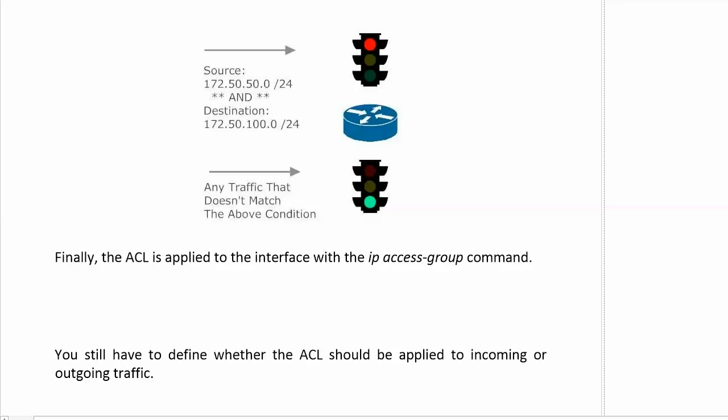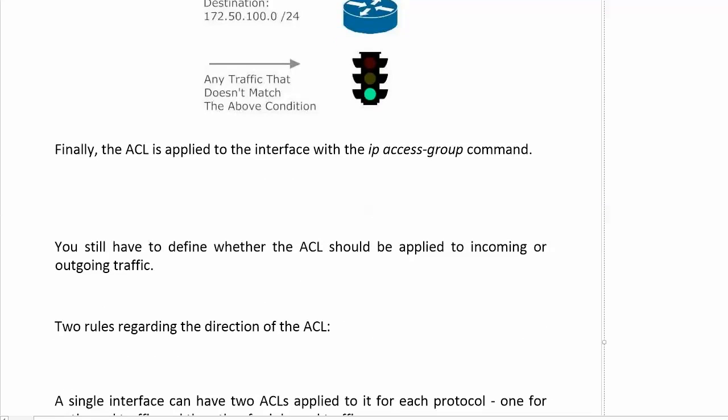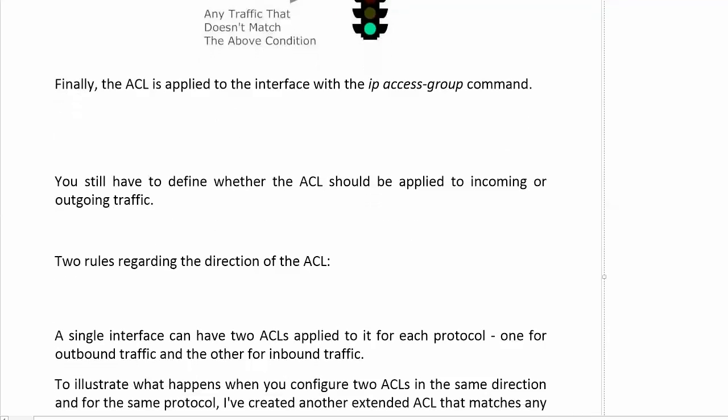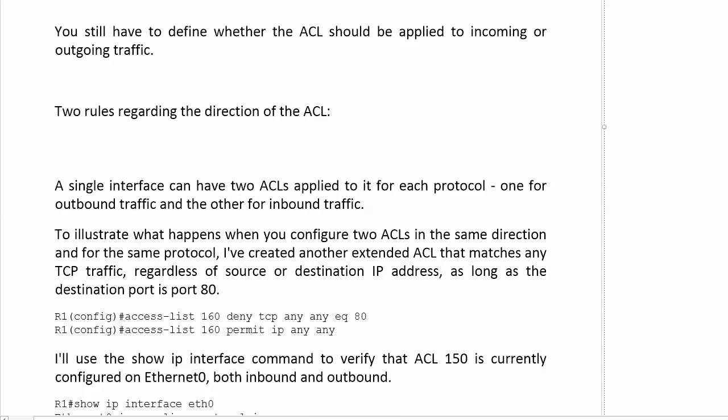Everything else is being permitted with our 'permit any any' statement. We put it on the interface with the 'ip access-group' command. Regarding direction: a single interface can have two ACLs applied to it per protocol — one for outbound traffic and one for inbound traffic. So let's look at what happens when you violate that rule by configuring two ACLs in the same direction for the same protocol.